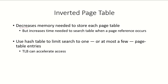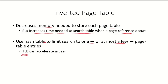The inverted page table decreases the memory required to store page tables, but it increases the time needed to search the table on each page reference. One solution is to use a hash table to limit the search to one or at most a few page table entries. The translation look-aside buffer, a cache that stores part of the page table, can also be used to store part of the hash table and the inverted page table.